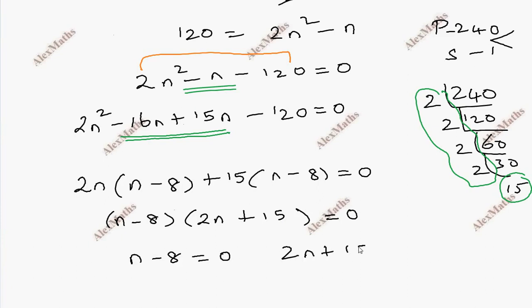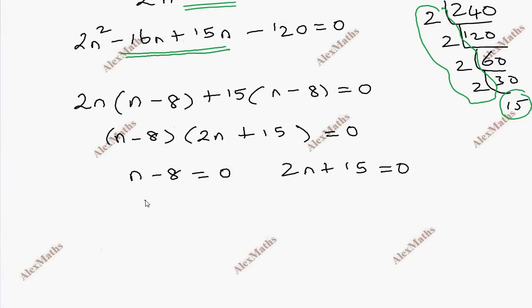So n minus 8 equals 0 gives n equals 8. Second term gives n equals minus 15 by 2.